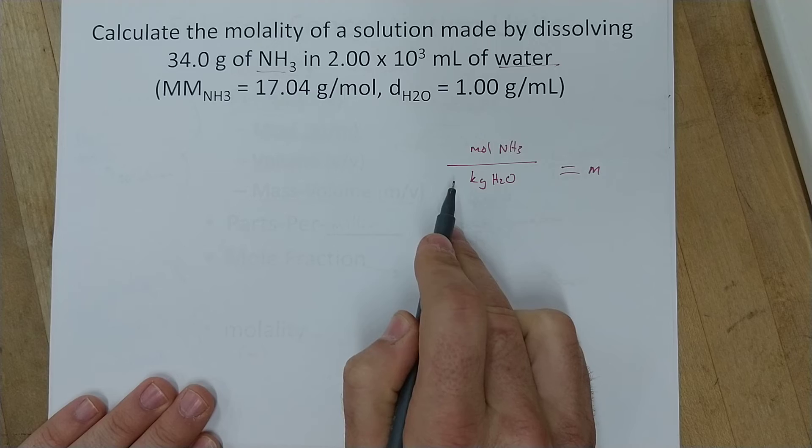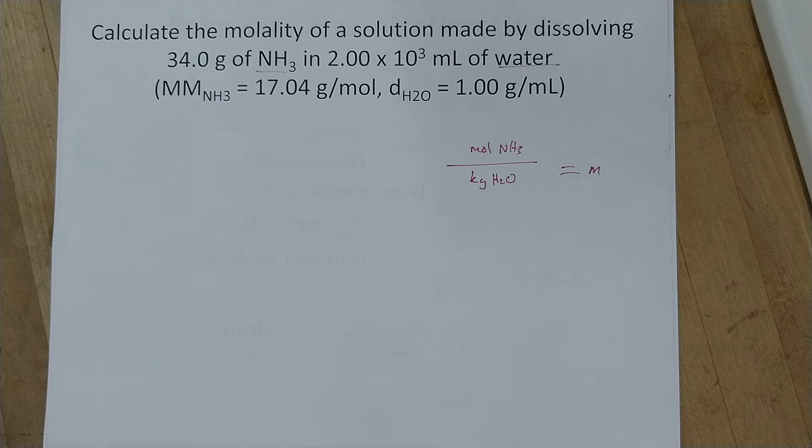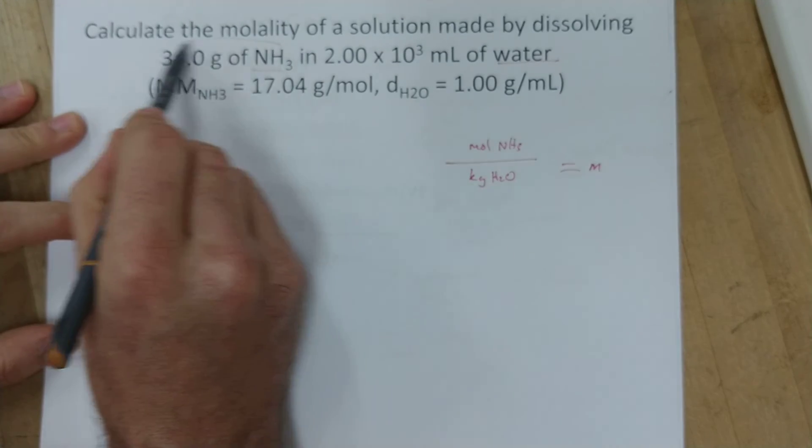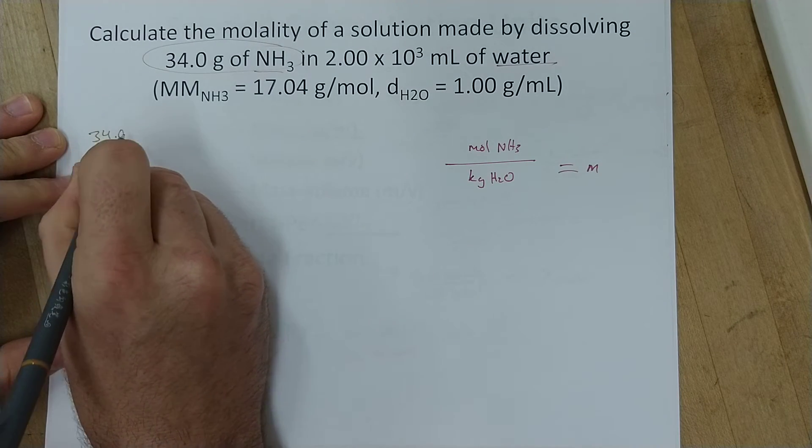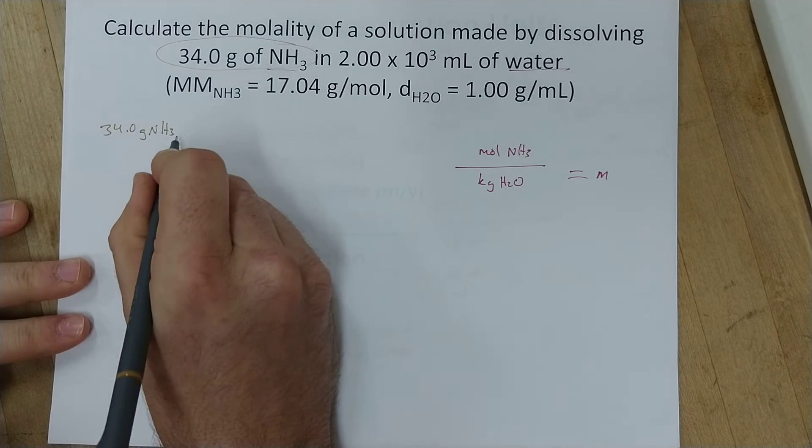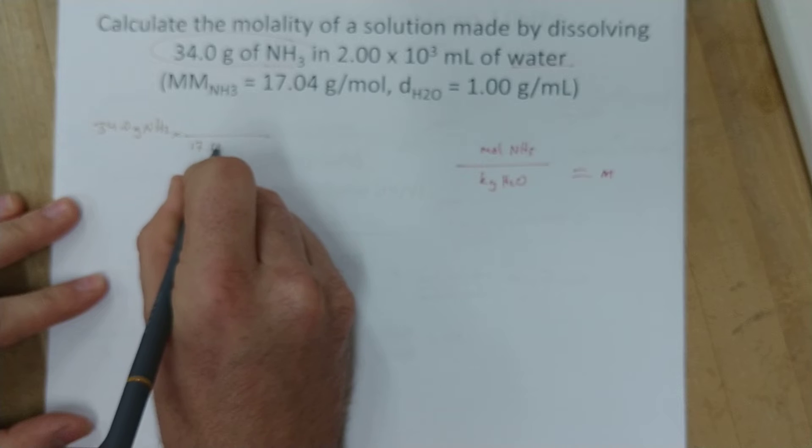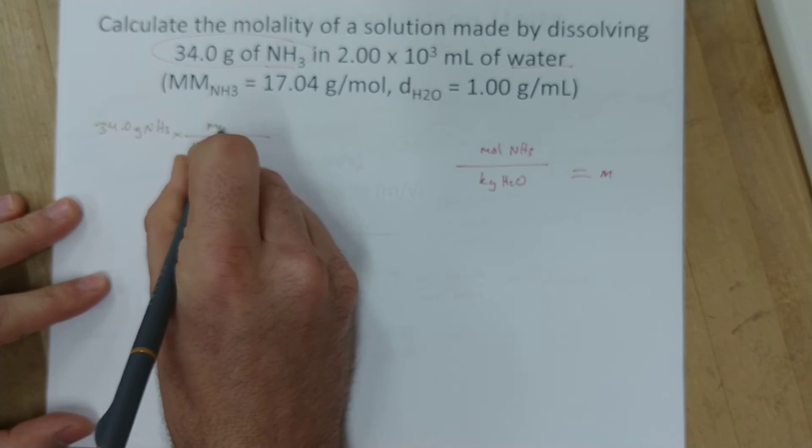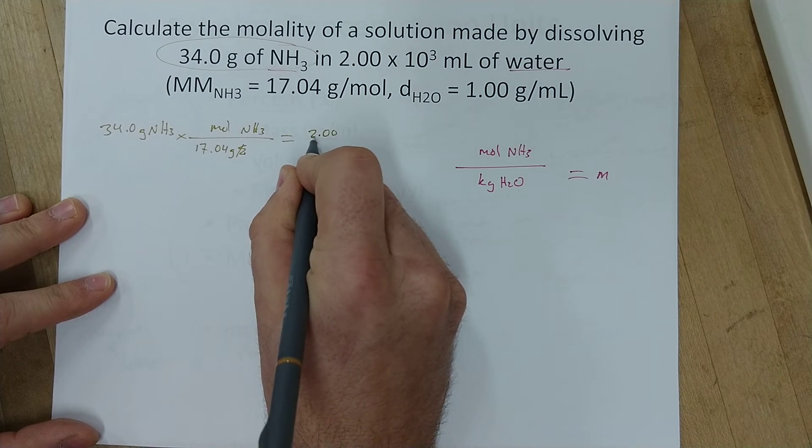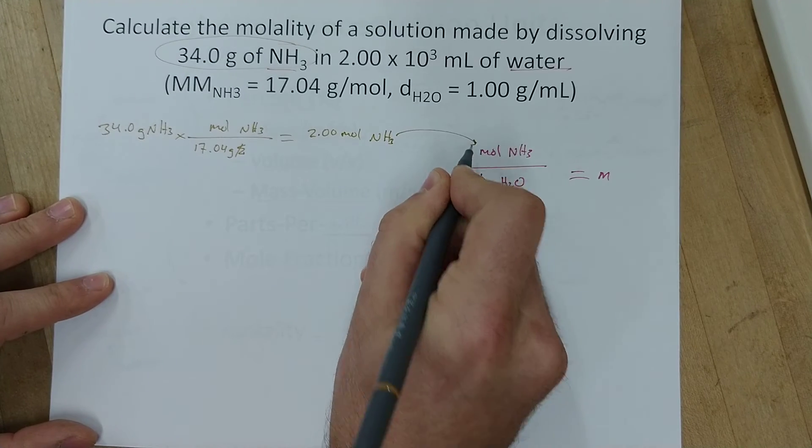So we just need to start over here and find the moles of that, the kilograms of that, and then we'll be ready to go. We'll start out by trying to find the moles of ammonia. Well how much ammonia is present? 34.0 grams of NH3. So I can take that, and I just need to convert grams to moles. I do that using the molar mass, 17.04 grams per mole of NH3. And I'll get, it'll round off to 2.00 moles of NH3, which I could then plug in there.